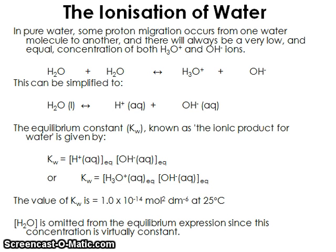The units of Kw are mol² dm⁻⁶. Don't worry about remembering this value — you're normally given it in an exam — but you do need to be able to use it. Because we know Kw is 1 × 10⁻¹⁴, if we know the concentration of H⁺ or the concentration of OH⁻, we can work out the other value by rearranging the equation.